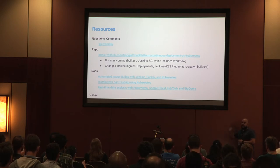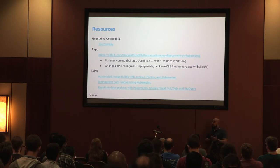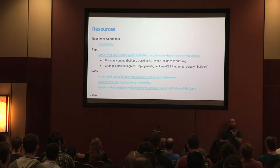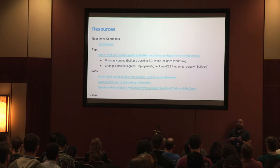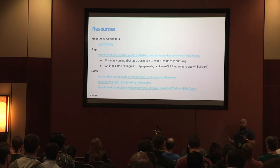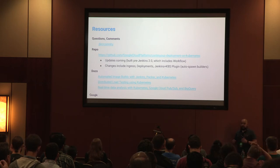The repo was built before Jenkins 2.0, so there are a couple of changes coming: we moved from rolling update to the deployment spec, and it now uses the ingress controller. Kubernetes now supports ingress L7 as a top-level item, so hooking up a cloud load balancer to Jenkins is much simpler than setting up an Nginx reverse proxy before. We're also adding the Jenkins Kubernetes plugin to auto-spawn builders. All those changes are coming in about a week — just waiting on open source approval at Google.